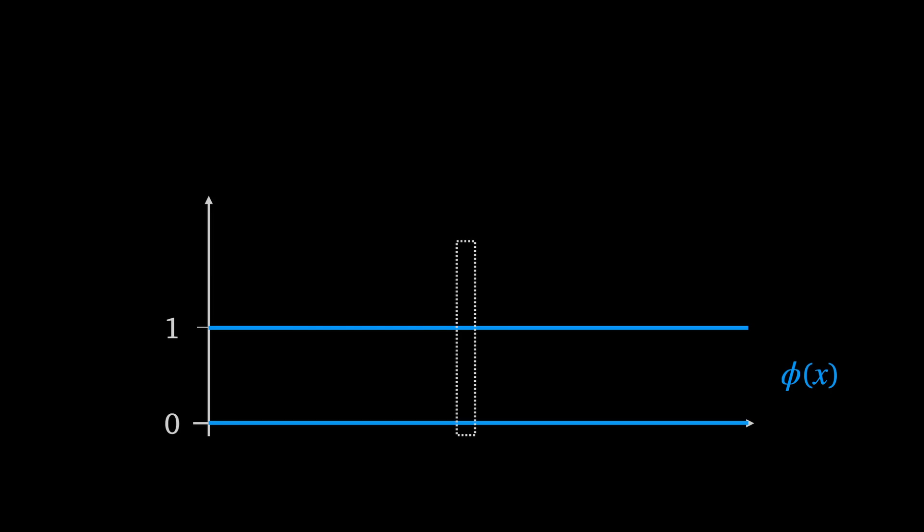The best I can do is say it's kind of both of these lines. In fact restricting the Dirichlet function to either just the rationals or just the irrationals gives you a constant function. It becomes continuous.